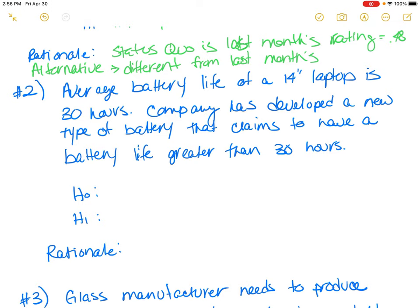The next scenario involves a laptop battery. The average battery life of a 14-inch laptop is 30 hours — that's the established average. A company has developed a new type of battery that claims to have a battery life greater than 30 hours. So the null hypothesis is that mu is less than or equal to 30 hours, and the alternative is that mu is greater than 30 hours.